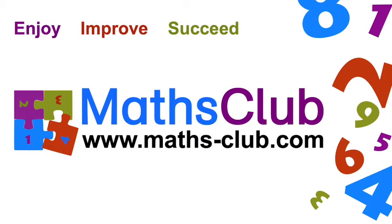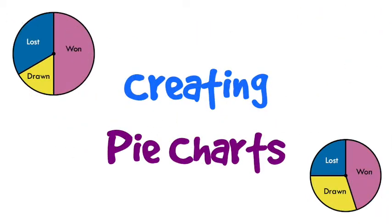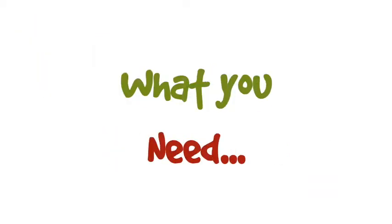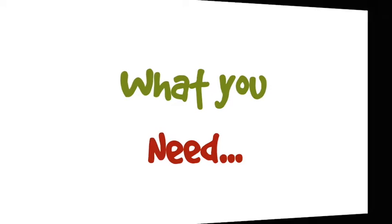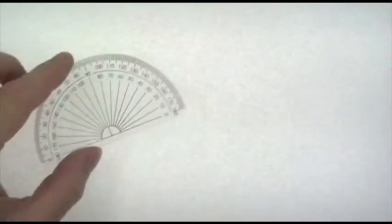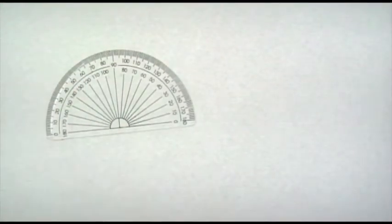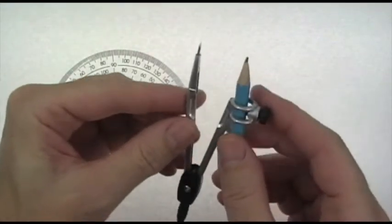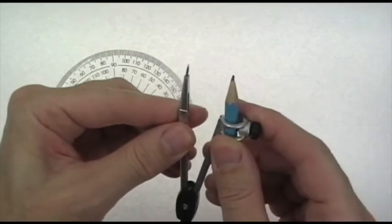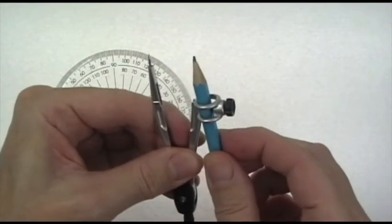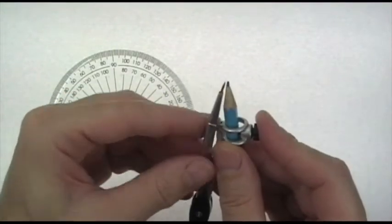Welcome back to mathclub.com. In this video I'm going to show you how to draw pie charts. First, let's see the equipment you need: an ordinary 180-degree protractor and a good set of compasses—ones which are not loose where the pencil doesn't wobble, and when you close them the point meets up with the pencil nib.